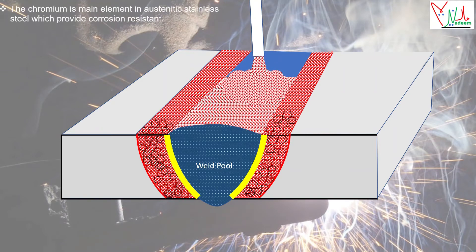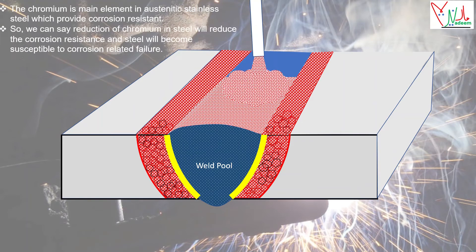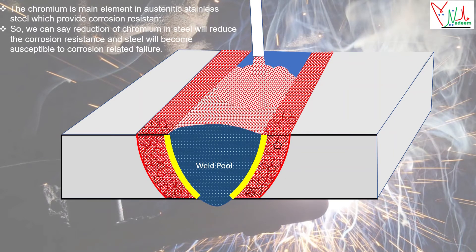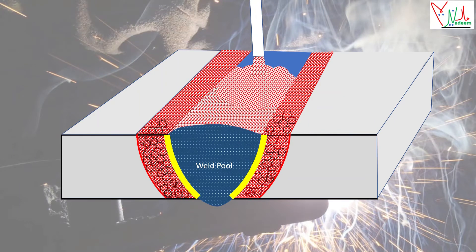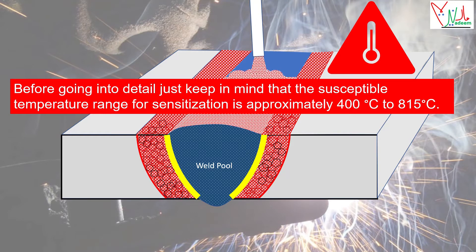How and why does the heat-affected zone become sensitized? Chromium is the main element in austenitic stainless steel, providing corrosion resistance. A reduction of chromium in steel will reduce corrosion resistance, making the steel susceptible to corrosion-related failure. The susceptible temperature range for sensitization is approximately 400°C to 815°C.